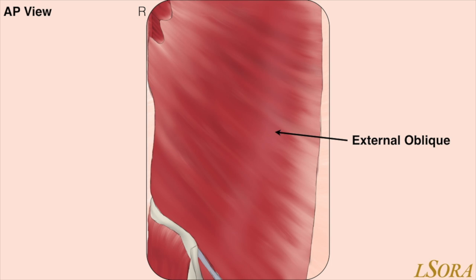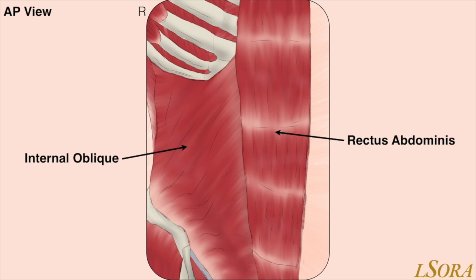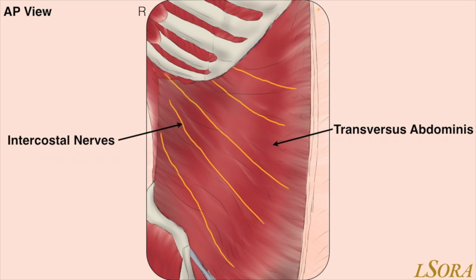Here, we are looking at the muscle layers of the anterolateral abdominal wall from the right-hand side. We have three flat muscles — the external oblique, the internal oblique, and the transverse abdominus — and a paired vertical muscle, the rectus abdominus. The intercostal nerves from T6 to T12 line the plane between the transversus abdominis muscle and the internal oblique.